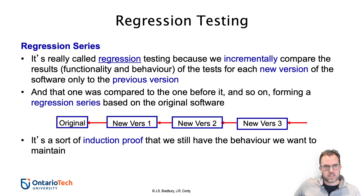We don't want to lose anything when we're doing testing. Our new tests are going to cover retired old tests, which in turn cover previous retired old tests, and so on back to the originally validated test suite created when we first deployed the software or even earlier during development. So we're maintaining the test suite as a regression series in the same way we're doing the testing of the software as a regression series.